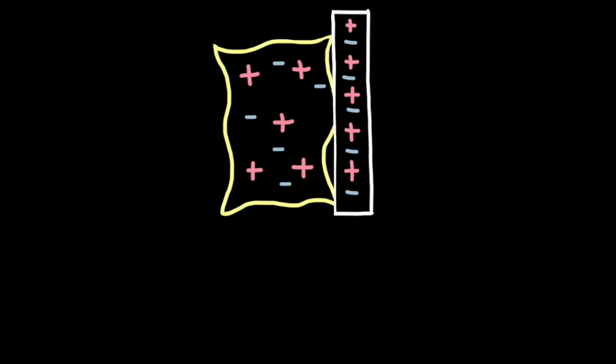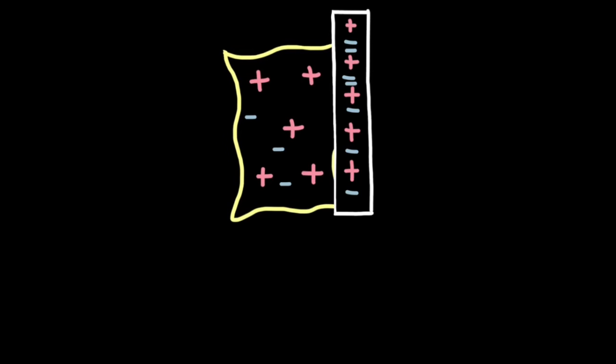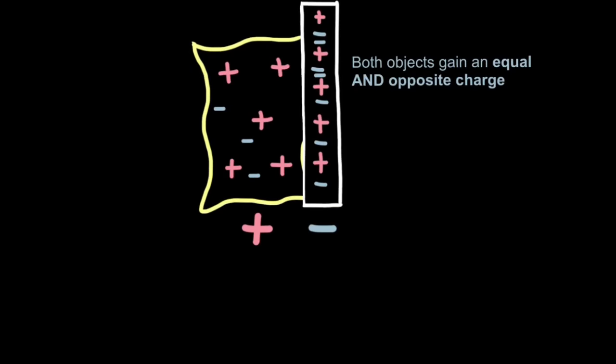By rubbing, we cause electrons to transfer from one object to the other. I am showing it from the cloth to the plastic rod but it could quite easily be the other way around. Now because this object has lost electrons and now has more protons than electrons, the overall charge of this cloth is positive. Whereas this object has gained electrons, so it has more negatively charged electrons than it does protons, so it gains a negative charge. Now because this has gained what this has lost, we say that both objects have gained an equal and opposite charge.